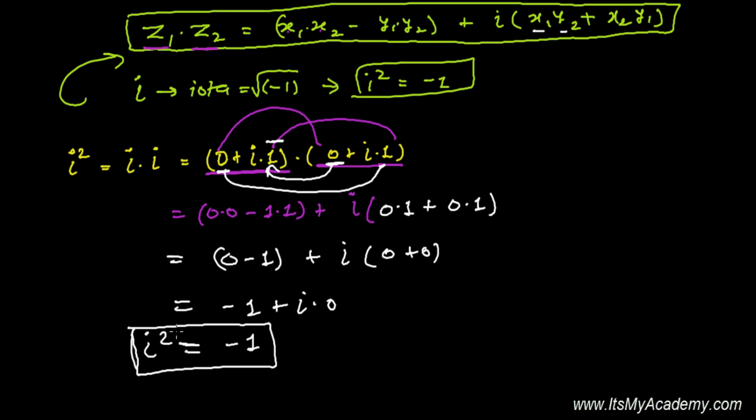I don't want to say this is a proof because to prove i squared equals minus 1, we're already using i squared equals minus 1. This result of minus 1 came after the application of i squared in the multiplication formula. So I don't want to say this is a proof, but you can see i squared is minus 1.